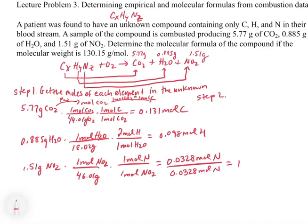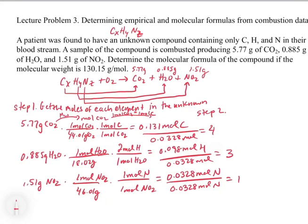So when we divide the 0.098 by the 0.0328, we get 4. So our empirical formula is going to be C4H3N1.